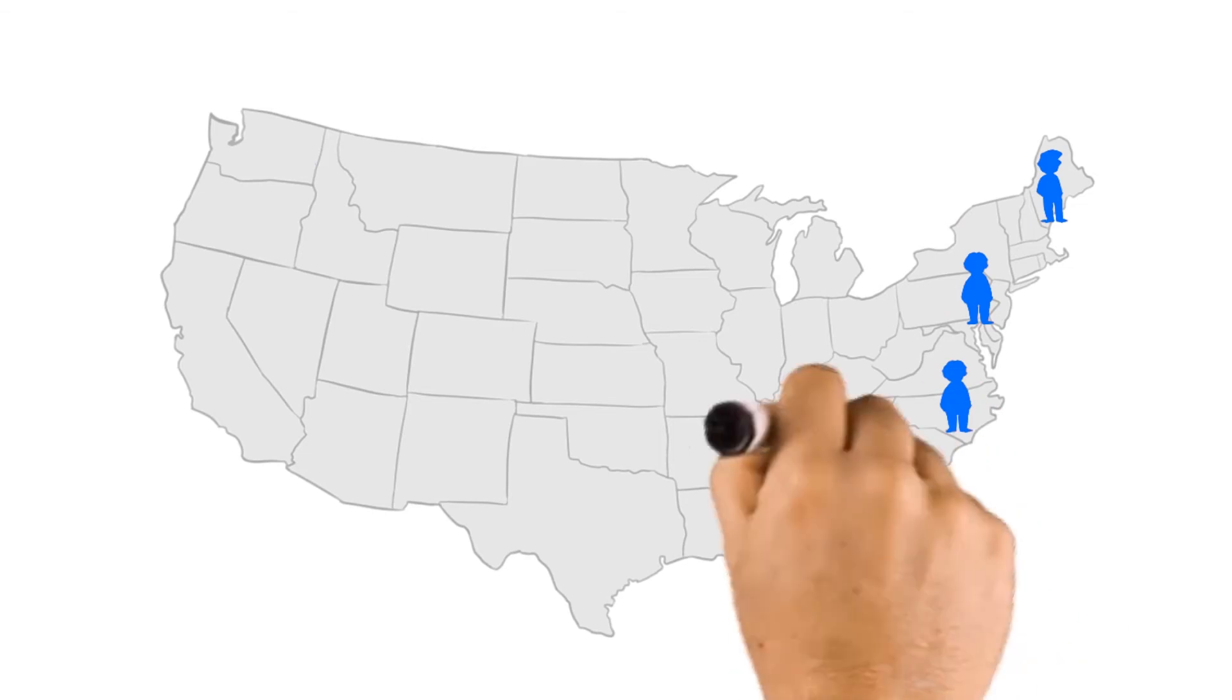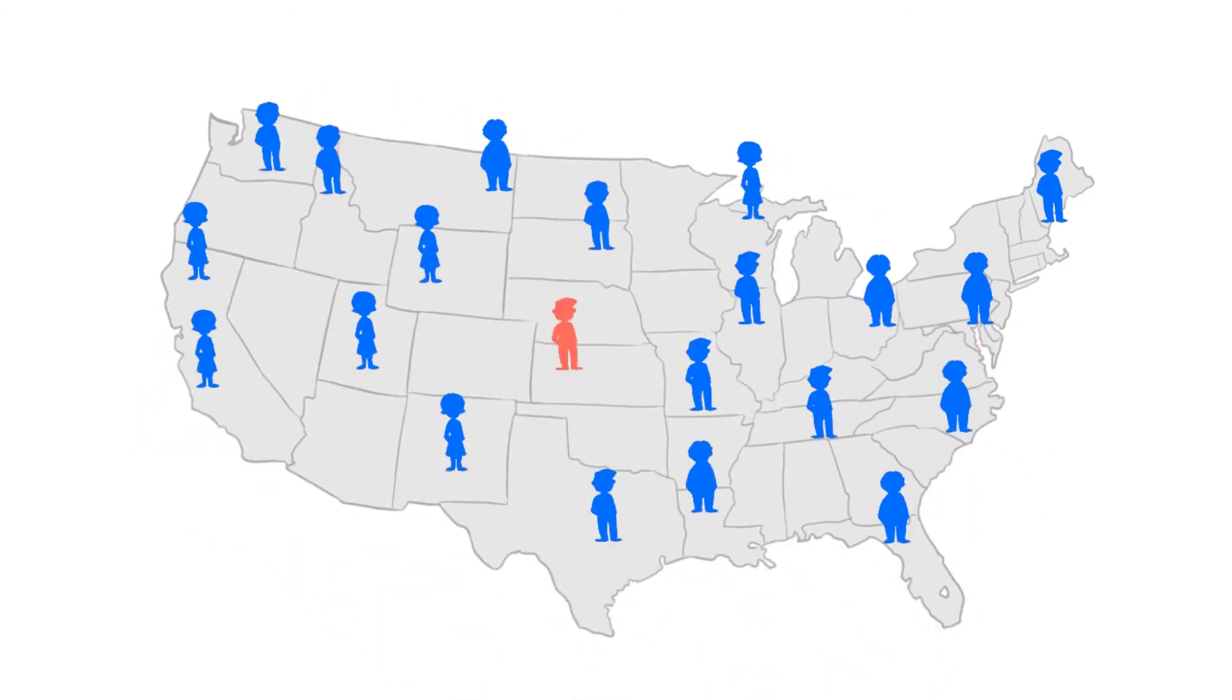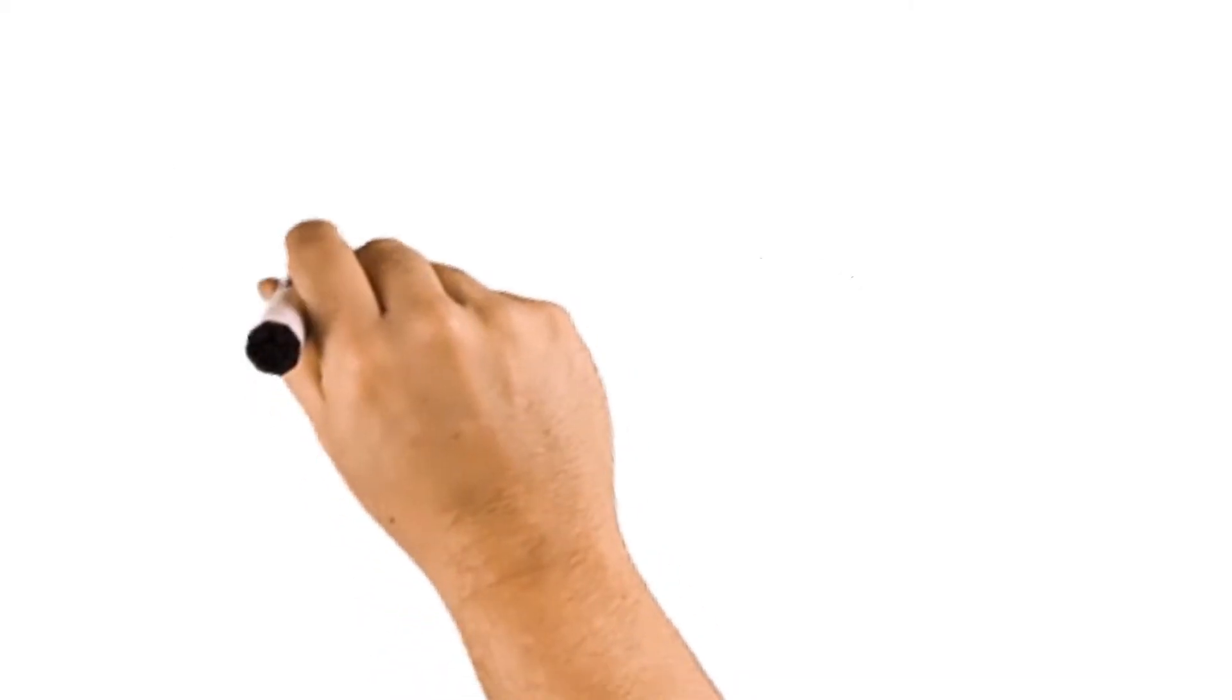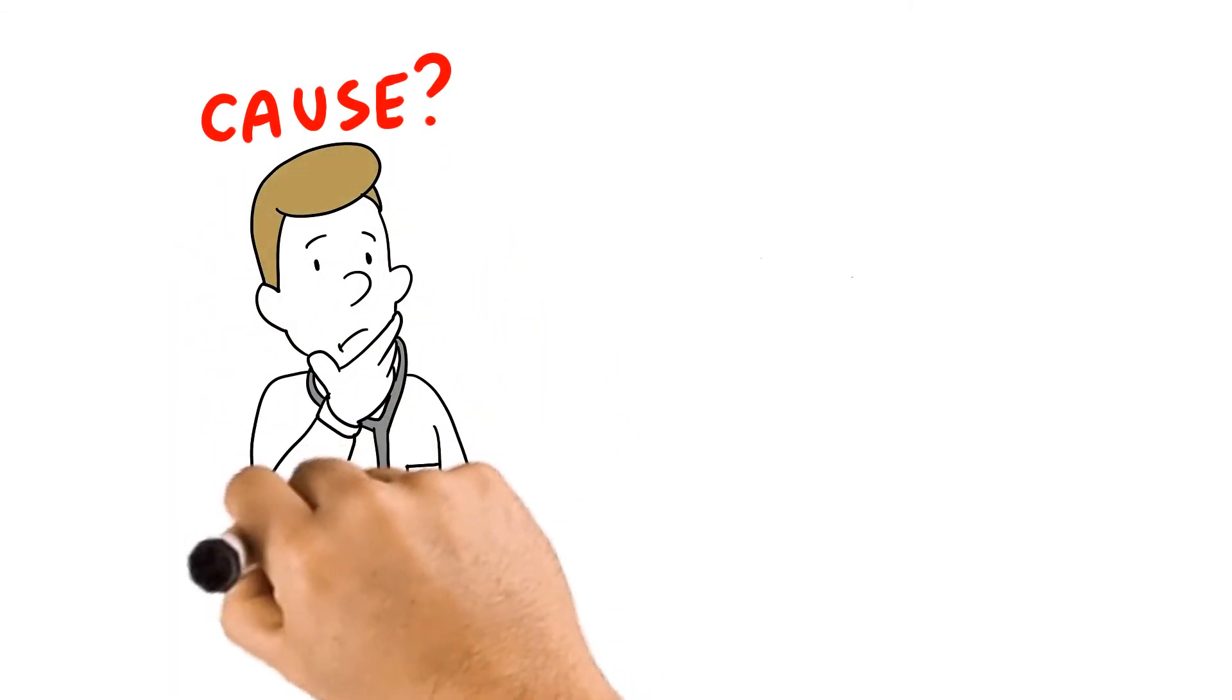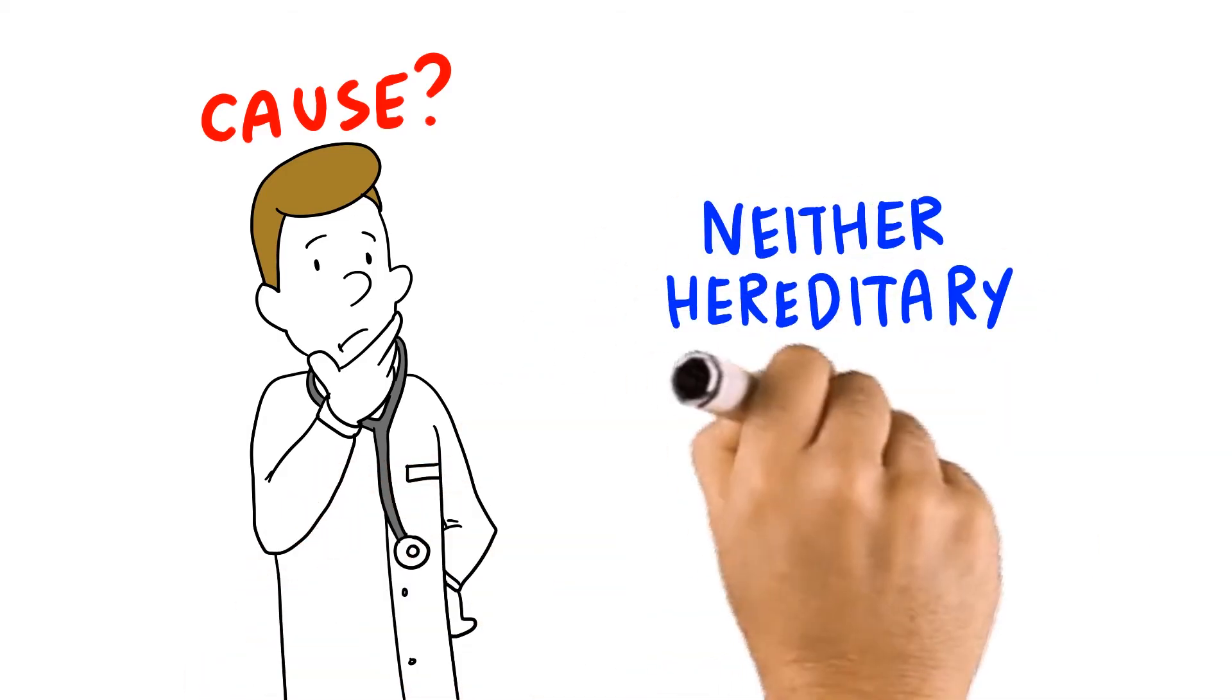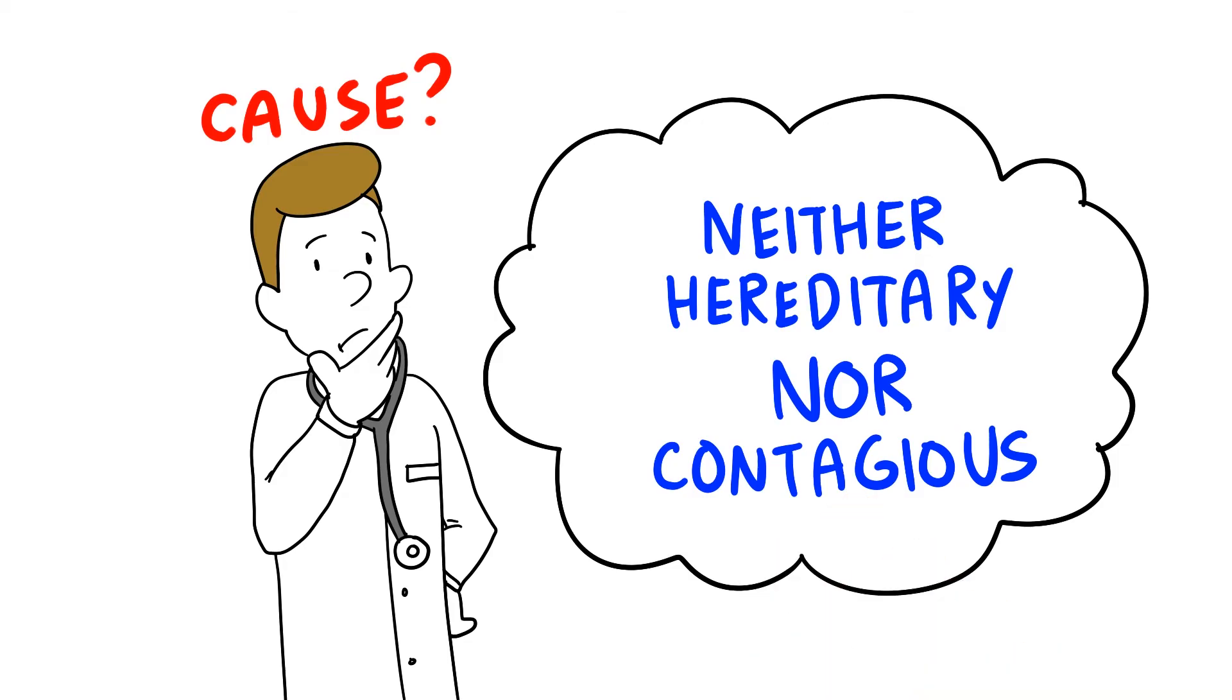CIDP affects only about 1 to 8 individuals in 100,000 people of all ages. Doctors are still not sure what causes patients to develop CIDP, but we do know that CIDP is not hereditary nor contagious, so you don't need to worry about passing it on to your friends and family.